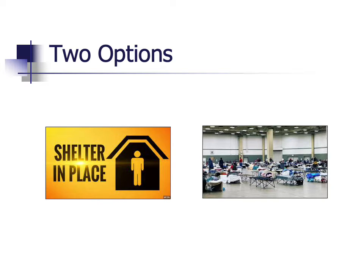There are basically two types of options we may need to consider in emergency management when it comes to sheltering. First is sheltering in place — a really good example of that is a tornado safe room. The second type is more traditional: the type of shelter you see operated by the American Red Cross when a major disaster occurs.